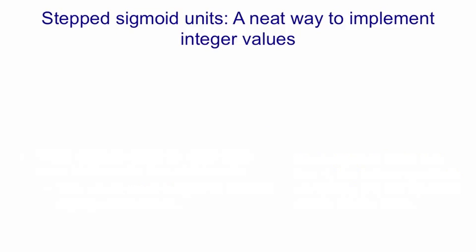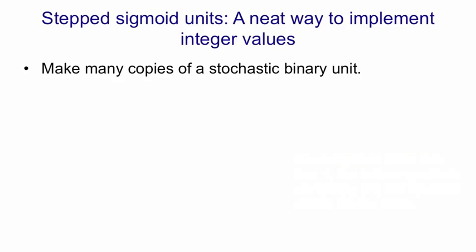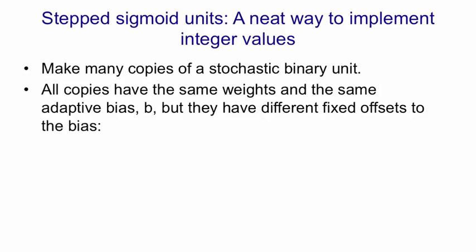I'm going to introduce stepped sigmoid units. The idea is we make many copies of each stochastic binary hidden unit. All the copies have the same weights and the same bias that's learned, b. But in addition to that adaptive bias b, they have a fixed offset to the bias. The first unit has an offset of minus 0.5, the second unit has an offset of minus 1.5, the third one has an offset of minus 2.5, and so on. If you have a whole family of sigmoid units like that, with the bias changed by one between neighboring members of the family, the response curve looks like this.